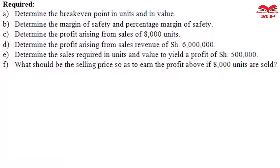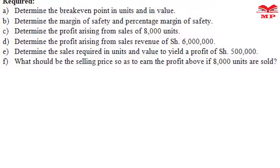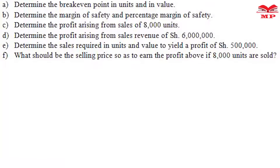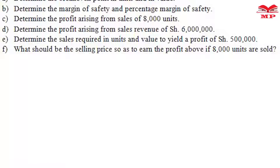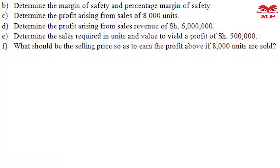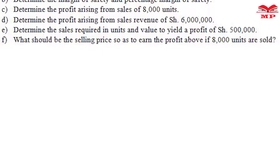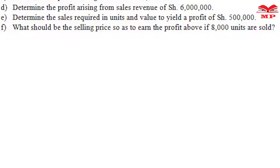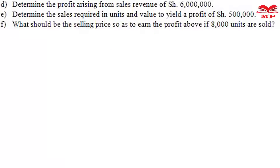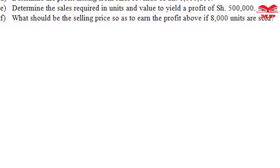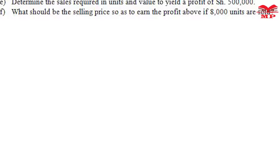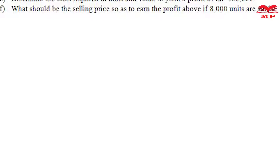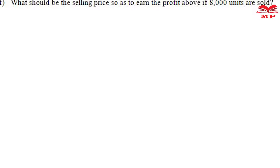And (f): what should be the selling price so as to earn the profit of 500,000 shillings if 8,000 units are sold?